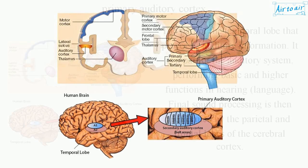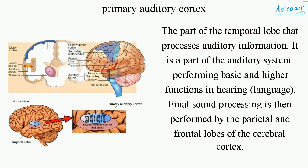Primary Auditory Cortex. The part of the temporal lobe that processes auditory information. It is a part of the auditory system, performing basic and higher functions in hearing and language. Final sound processing is then performed by the parietal and frontal lobes of the cerebral cortex.